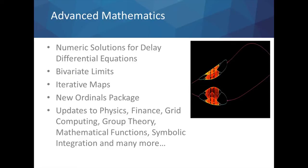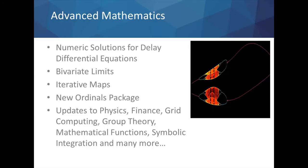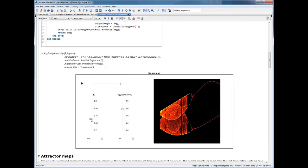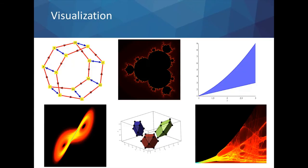Maple 2015 also expands Maple's offerings for advanced mathematics in many other ways of particular relevance for engineering and scientific computation. Maple's facilities for finding numeric solutions for differential equations now support delay differential equations, significantly enhancing the breadth of physical phenomena that can be modeled. Maple also contains new tools for finding bivariate limits, new tools for rapidly computing and visualizing iterative maps — as seen in this interactive exploration of a Gauss map — a new package supporting the arithmetic of ordinal numbers, and many updates to existing functionality including physics, finance, grid computing, group theory, mathematical functions, symbolic integration, and related visualizations.